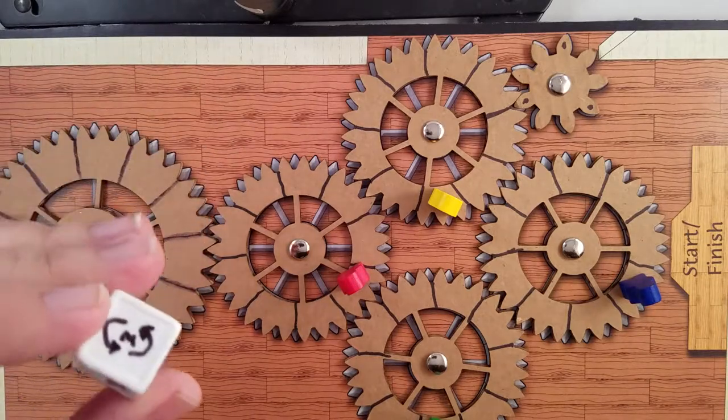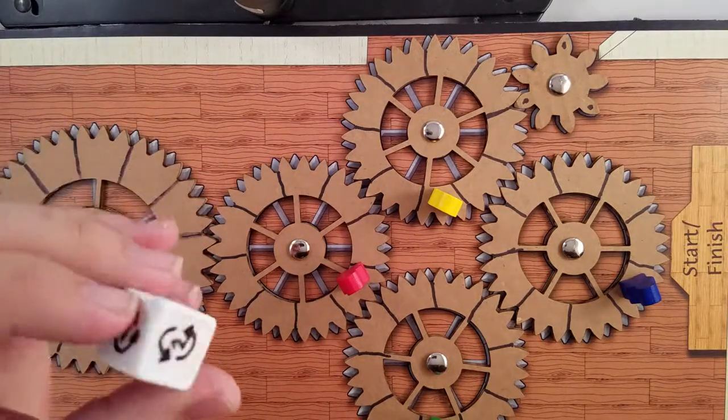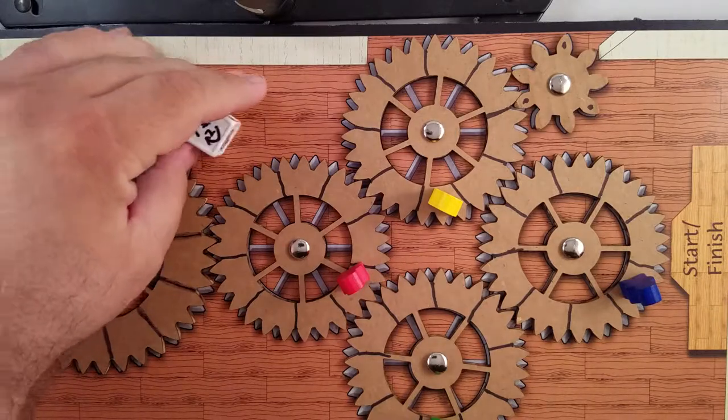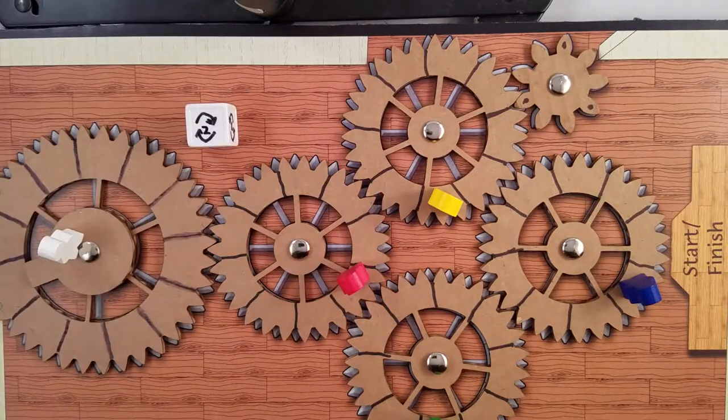The die will rotate in different directions one, two, or three spaces clockwise or counterclockwise, and that will determine how the board moves and how the players move.